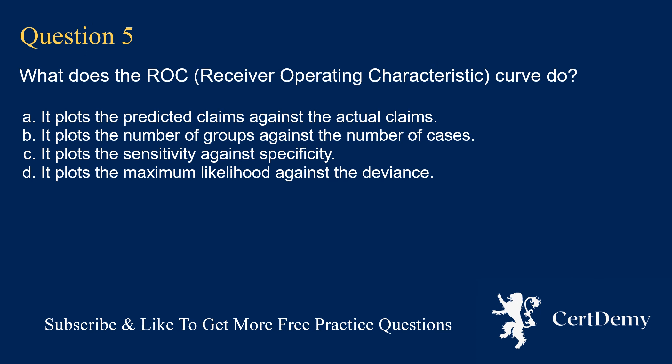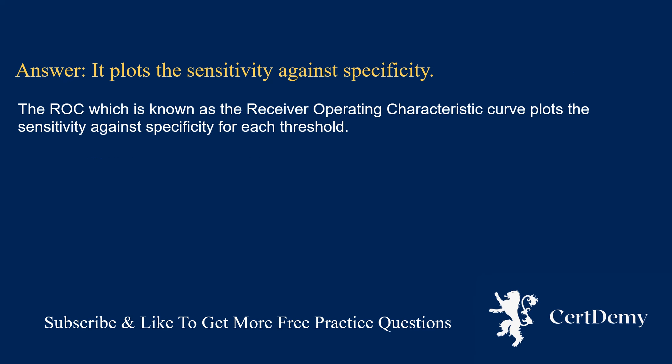Question 5. What does the ROC receiver operating characteristic curve do? Options: it plots predicted claims against actual claims; it plots number of groups against number of cases; it plots sensitivity against specificity; it plots maximum likelihood against deviance. The answer is: it plots the sensitivity against specificity. The ROC curve plots the sensitivity against specificity for each threshold.